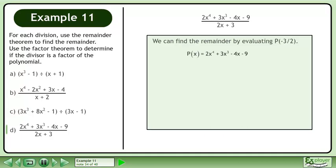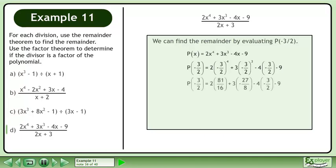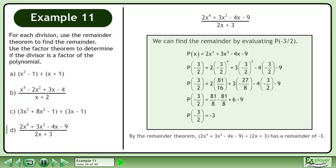We can find the remainder by evaluating p at negative 3 over 2. We write p of x equals 2x to the power of 4 plus 3x cubed minus 4x minus 9, and use negative 3 over 2 as the function input. Evaluate the powers, simplify by multiplying and reducing. The result is negative 3. By the remainder theorem, 2x to the power of 4 plus 3x cubed minus 4x minus 9 divided by 2x plus 3 has a remainder of negative 3.